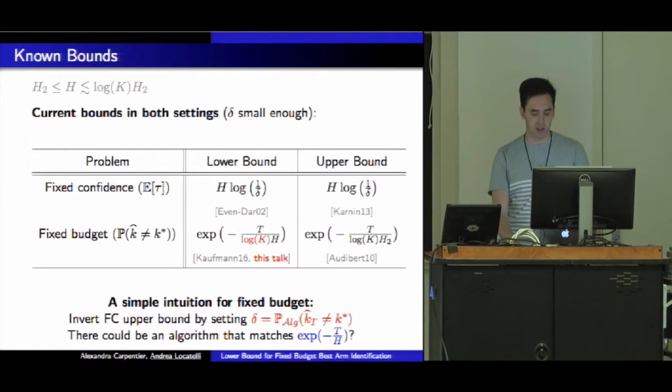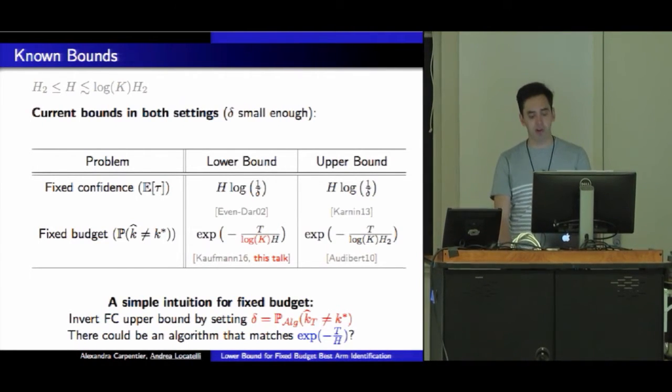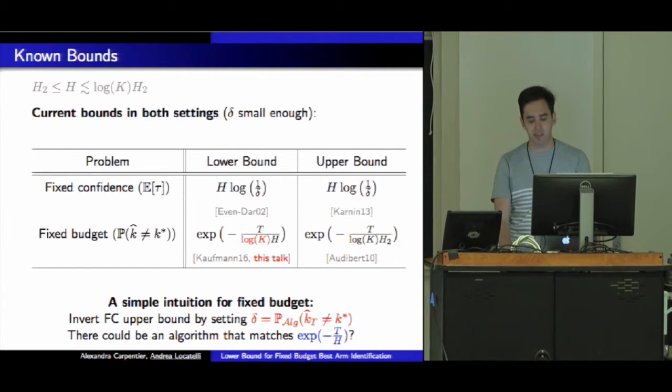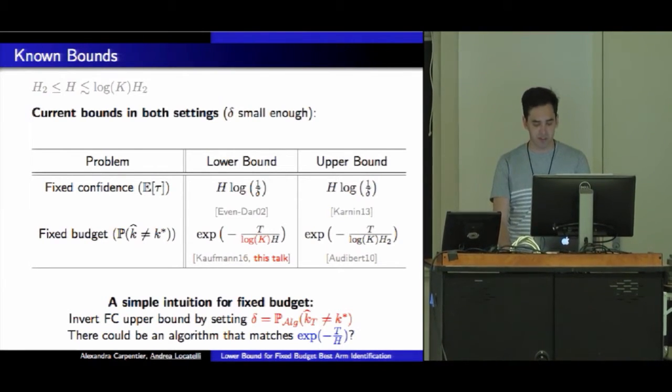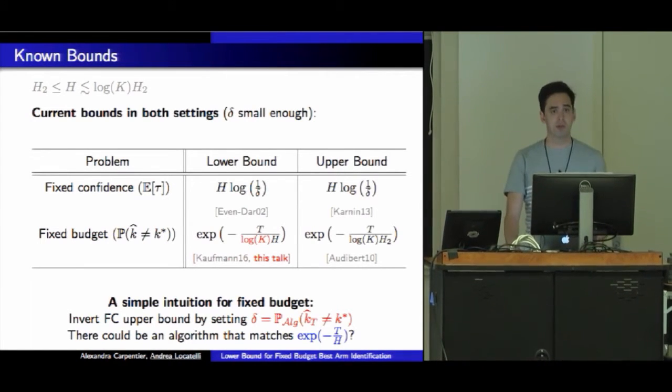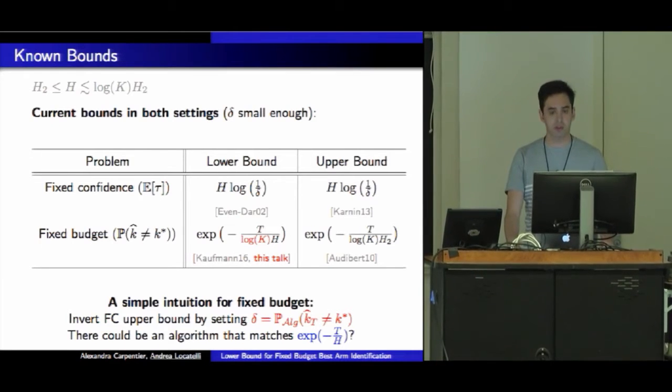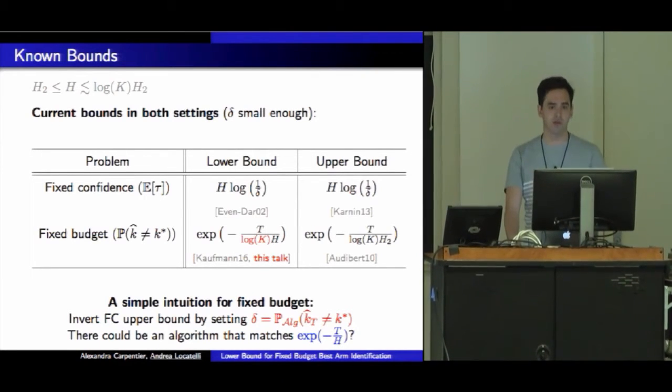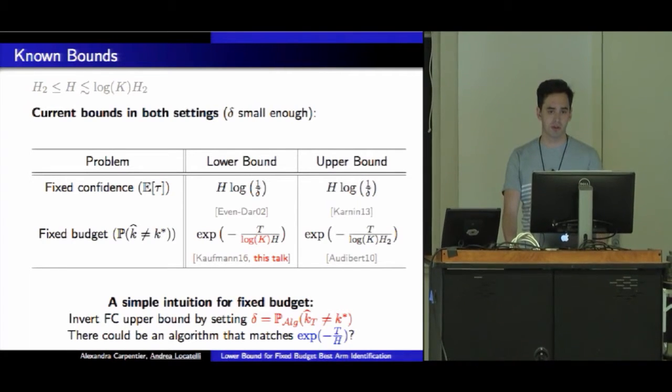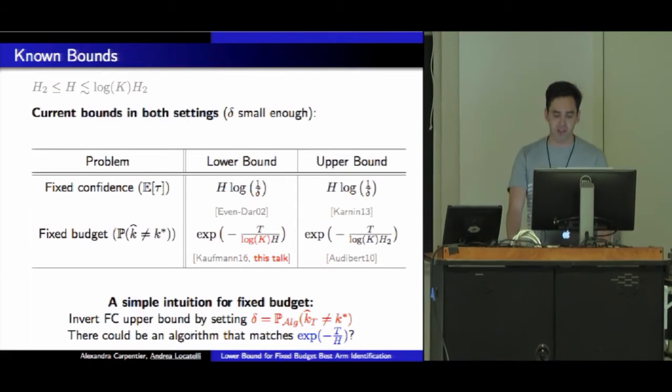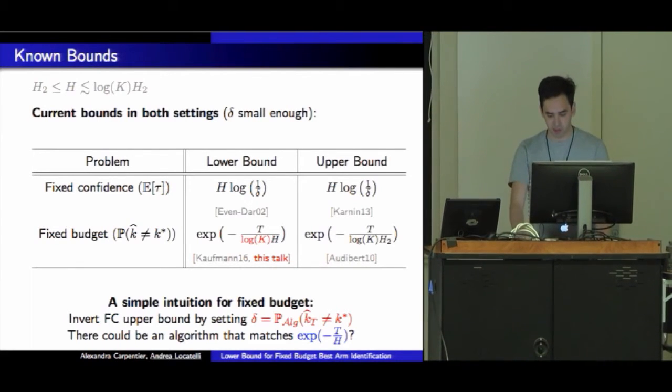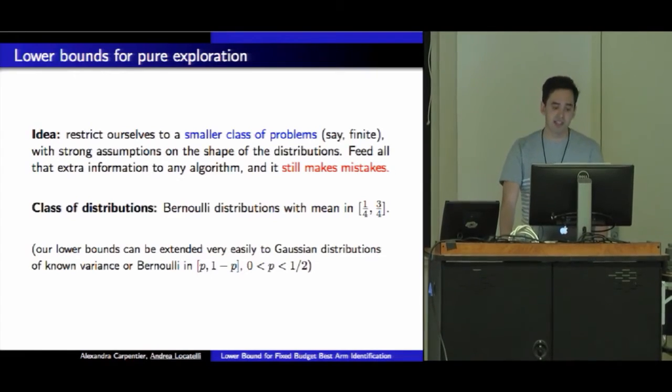A simple intuition in the community was that it could be possible to invert the fixed confidence upper bound by setting this delta to the probability of error for the fixed budget problem, and that there could maybe be an algorithm that matches this exponential minus t over H rate. Of course, this reasoning is flawed because the goal of my talk is to show that one cannot avoid this log K adaptation price.